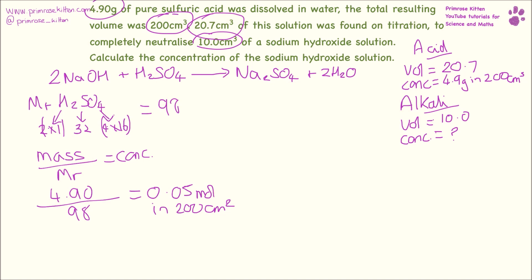To turn it into our concentration, we need to times it by 5 because 200 times 5 is 1000. We want our concentrations in liters. So 0.05 times 5 equals 0.25 moles per decimeter cubed. So now we know our concentration of our acid is 0.25.